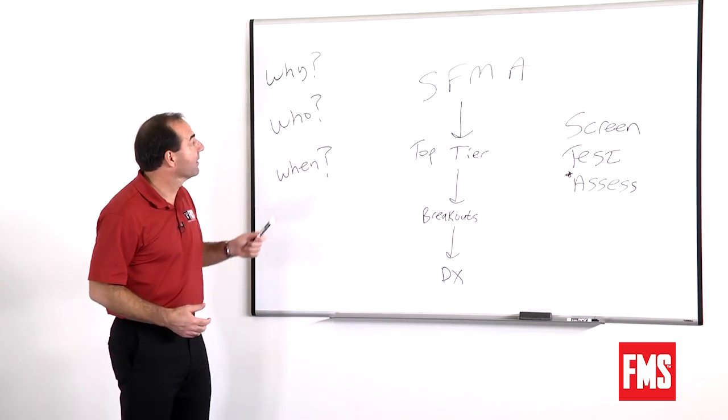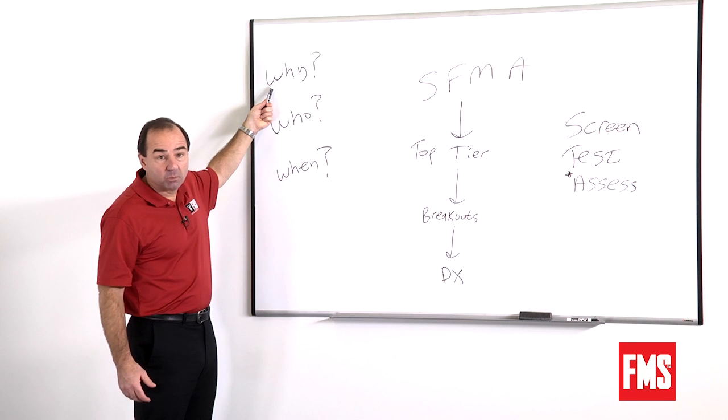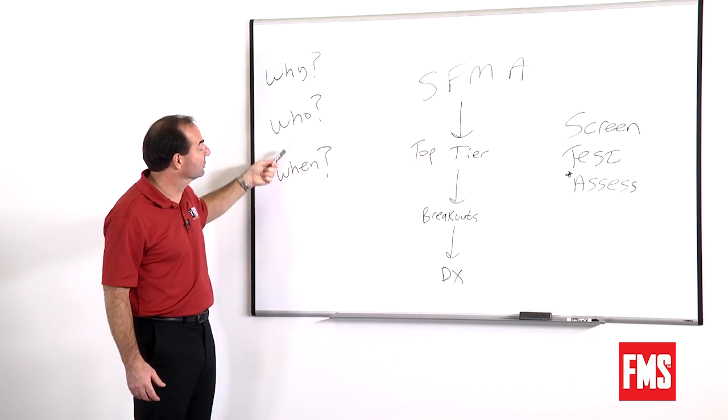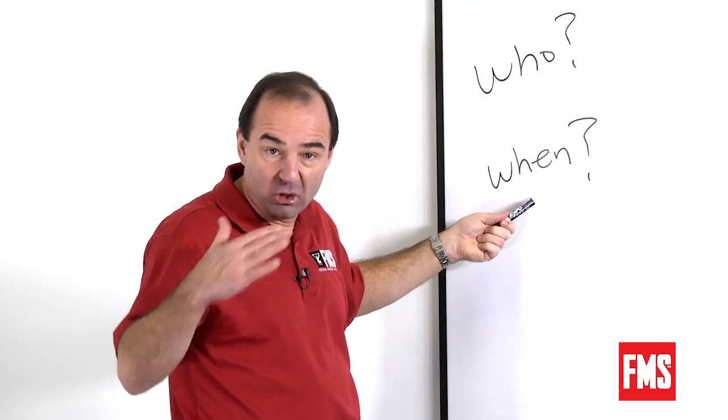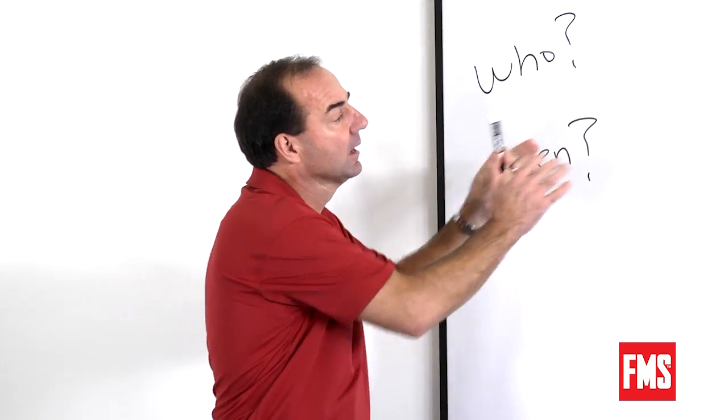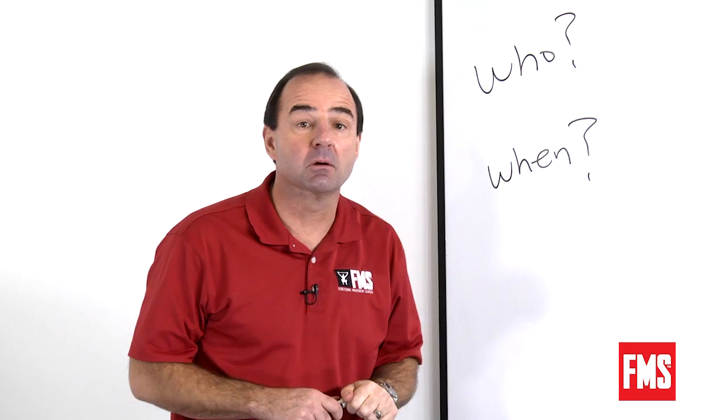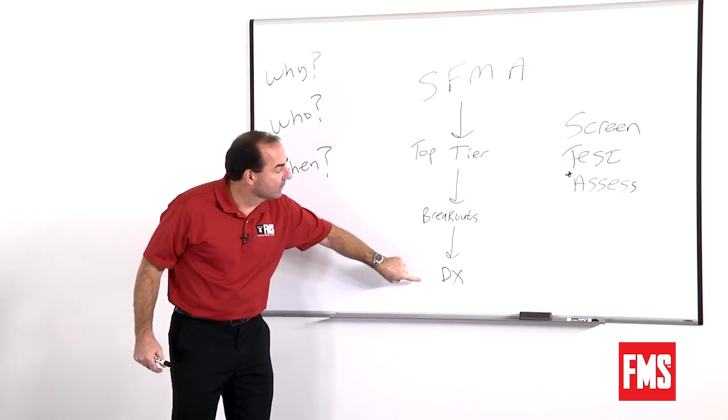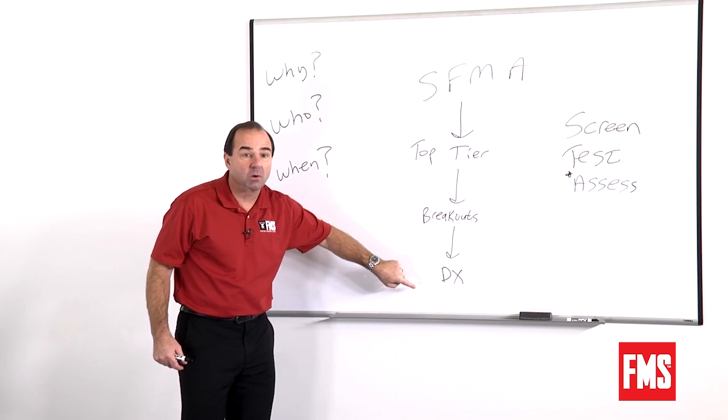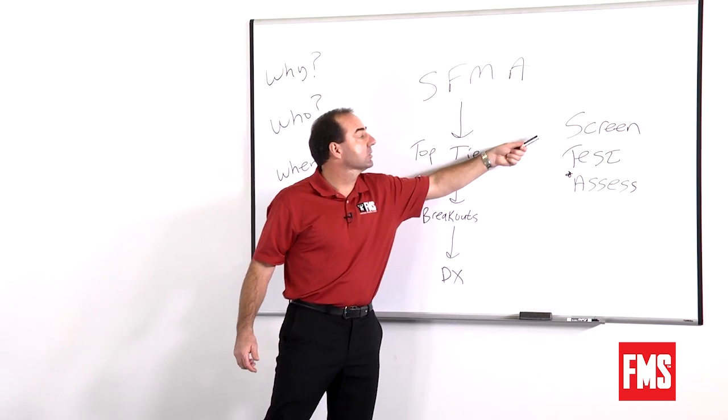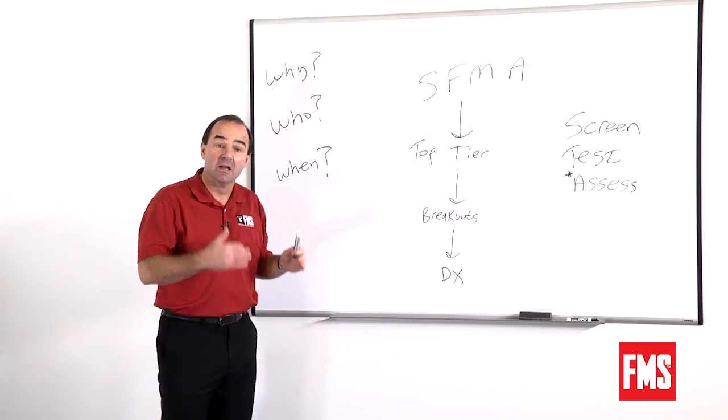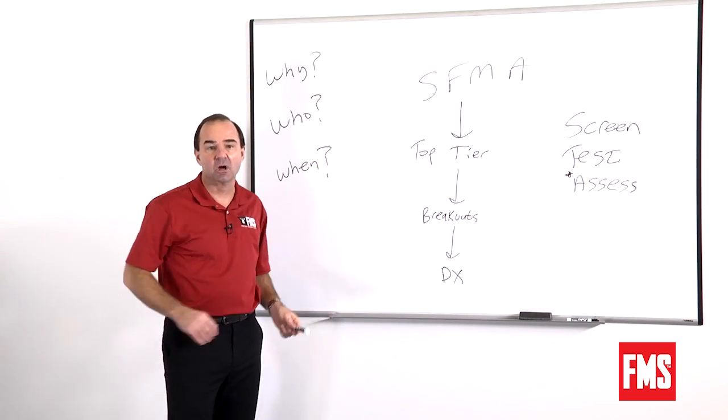So in short, the SFMA manages regional interdependence for basically all of your patients when they're ready, when their acute level is down enough that you can get into the system. So remember, we're going to manage regional interdependence, we're going to find their movement diagnoses, we're going to correct them, and then we're going to discharge them out with an appropriate FMS and Y Balance test to prevent those problems going forward.